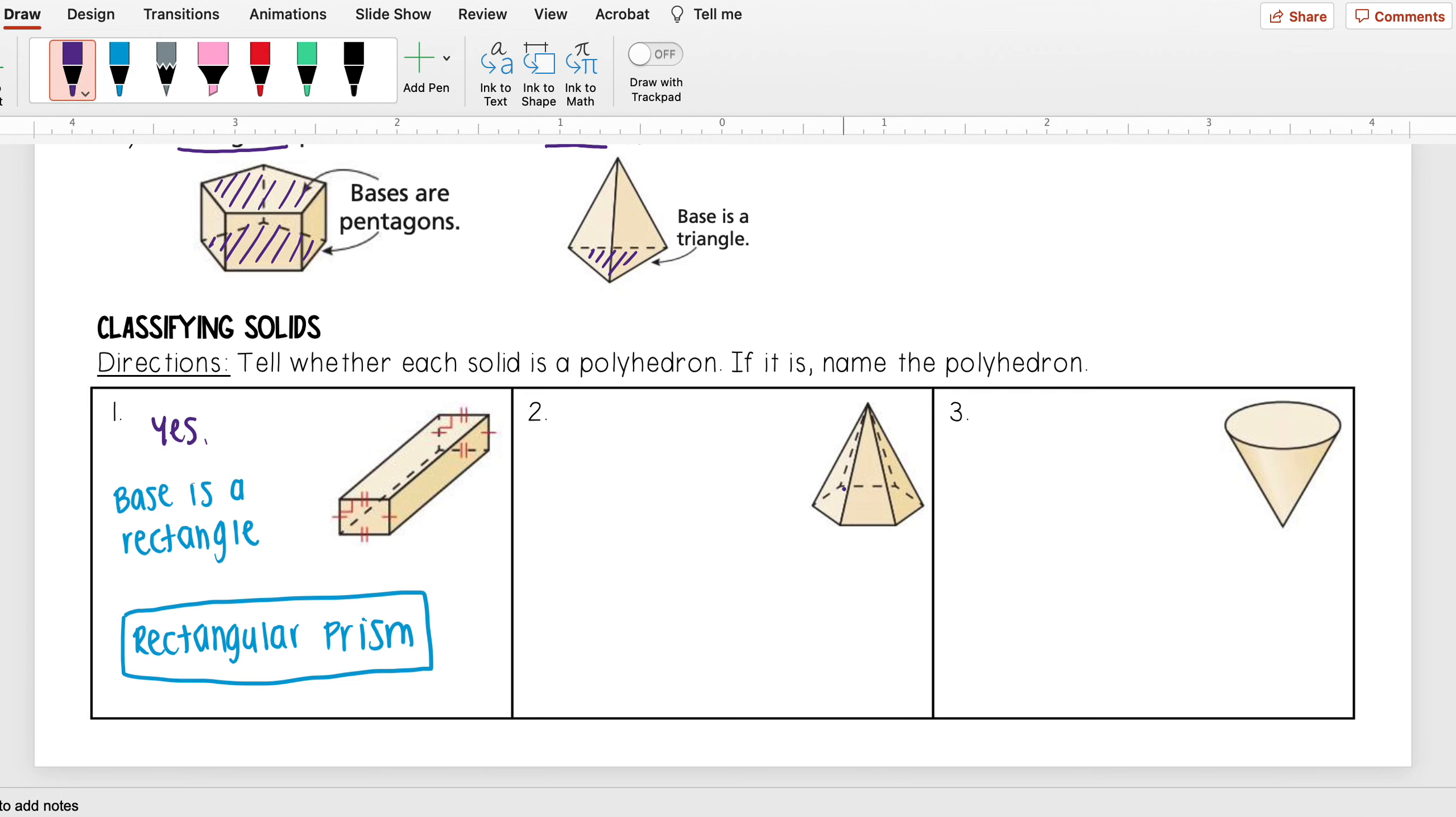Okay, looking at this next one, first I determine whether it's a polyhedron. I don't have any curved edges, so that's going to be a yes. Looking at this, I see I only have my one base, so that means that this is going to be a pyramid. To name my pyramid, I need to figure out what shape my base is, and I see my base here has one, two, three, four, five, six sides—that's a hexagon. So that means that this is going to be a hexagonal pyramid.